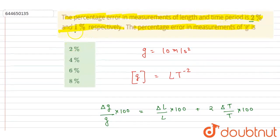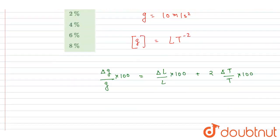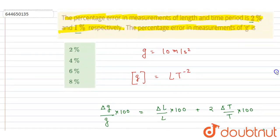1, which is 2, so it is 4%. This is the answer to this question. Now if you see here, B is the correct option. Thank you.